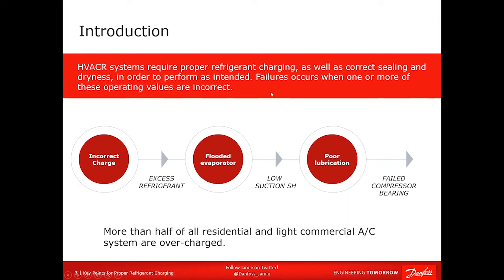HVAC systems require refrigerant as their lifeblood — it is the refrigerant that absorbs and rejects heat by changing state. When you have the correct amount of refrigerant, it is boiling at the correct pressure and temperature, and you are running out of liquid or vapor at the correct point towards the outlet of the coil. So you have proper superheat and subcooling, and you're not operating at too high or too low a temperature, which reduces efficiency.